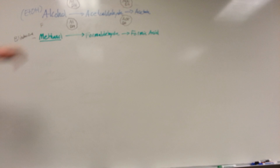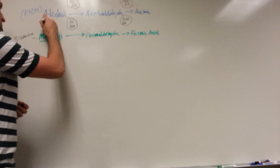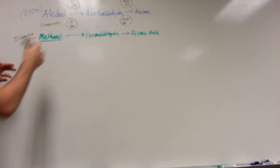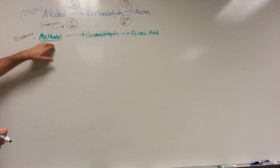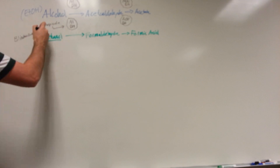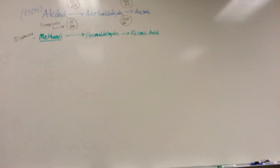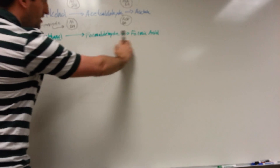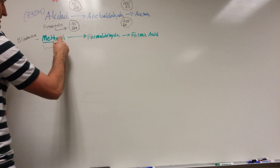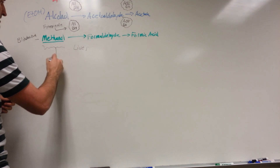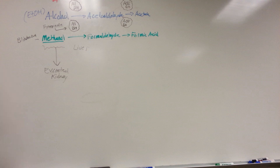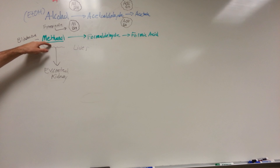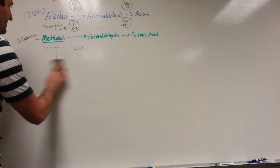There's also a drug we can give: fomepizole. Fomepizole is an inhibitor of alcohol dehydrogenase. So we can either use competitive inhibition with ethanol to outcompete the methanol for this enzyme, or we can give fomepizole directly. By blocking this enzyme, the methanol won't be broken down by the liver into formaldehyde. Instead, all the methanol will be excreted by the kidney. We want the body to excrete the methanol rather than break it down.